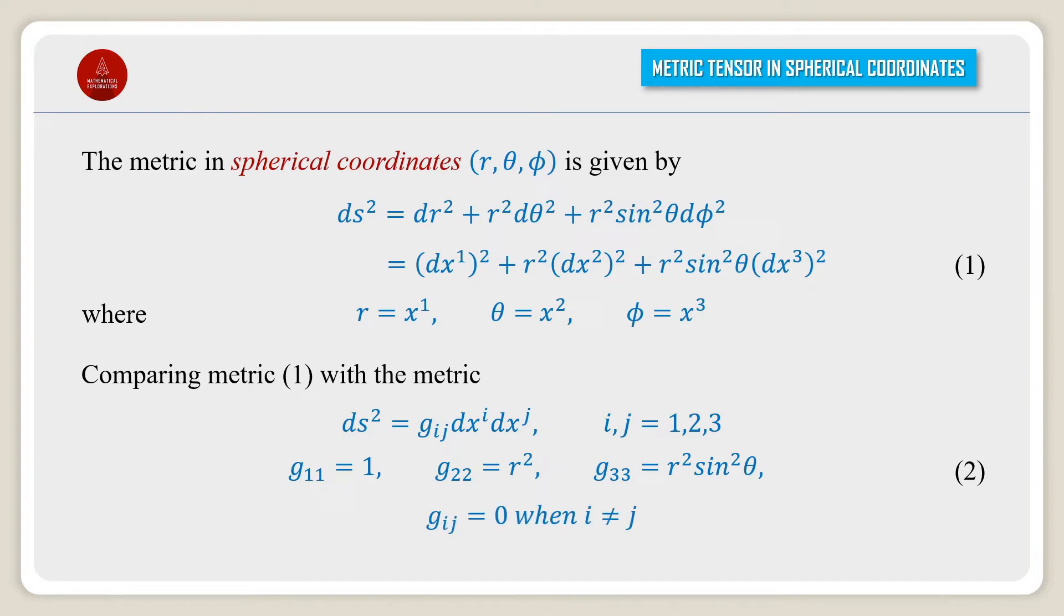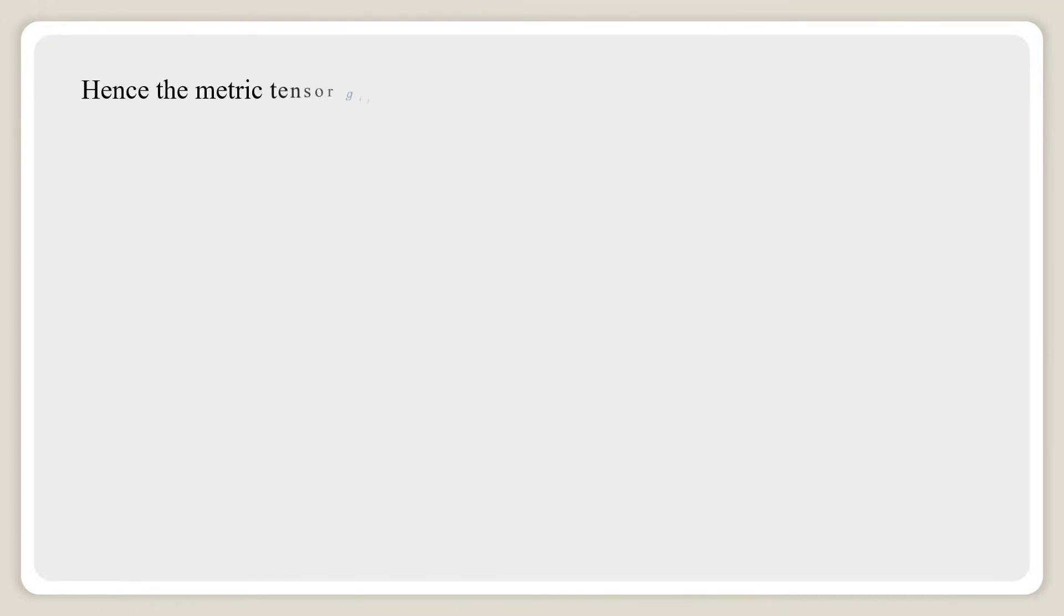Hence the metric tensor gᵢⱼ is given by gᵢⱼ equal to the first row: g₁₁, g₁₂, g₁₃; the second row: g₂₁, g₂₂, g₂₃; and the third row: g₃₁, g₃₂, g₃₃.